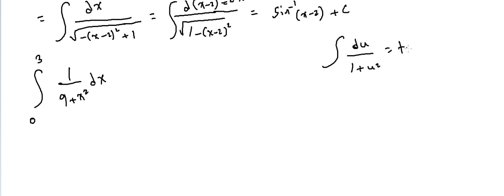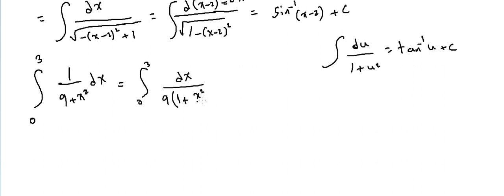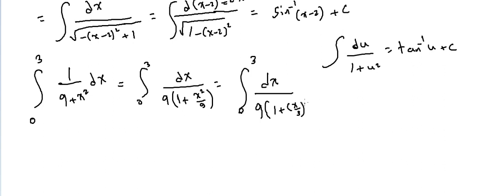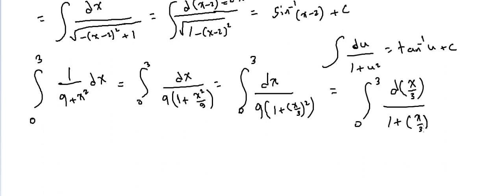We rewrite 9 + x² as 9·(1 + x²/9), giving integral from 0 to 3 of dx over 9·(1 + (x/3)²). So u = x/3 is the substitution we identify here.